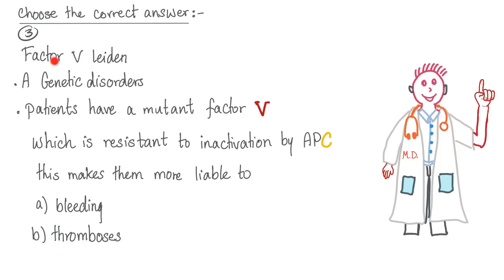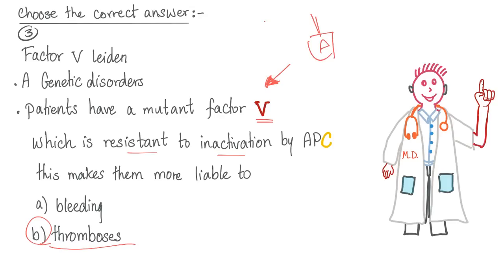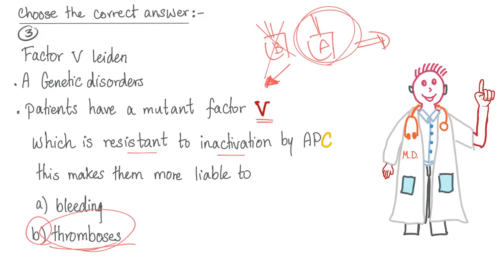Question 3: Factor V Leiden is a genetic disorder in which patients have a mutant factor V that is resistant to inactivation by activated protein C. This makes them more liable to bleeding or thrombosis? The answer is B, thrombosis. Factor V is not going to be inactivated — it's resistant. When you have an accelerator that cannot be overridden by the brakes, the brakes are useless. You have lots of acceleration, lots of thrombosis.